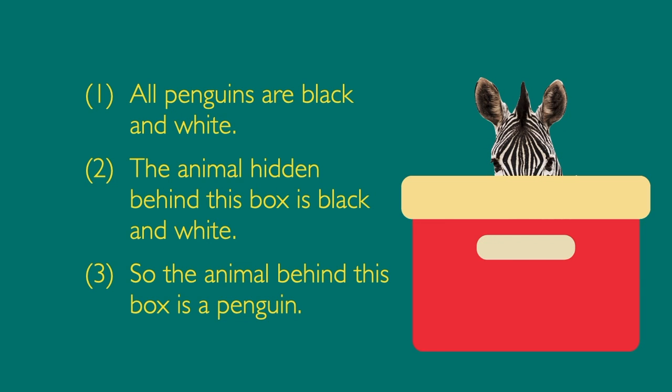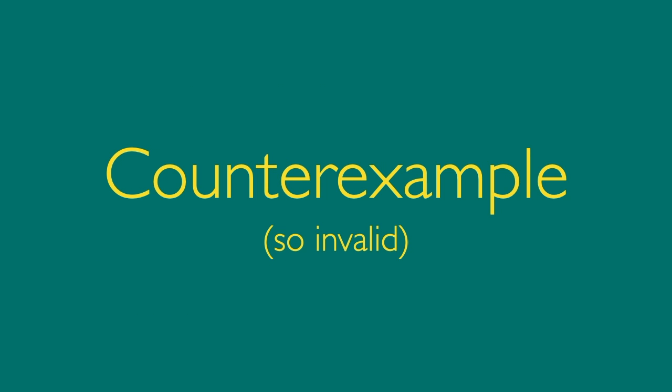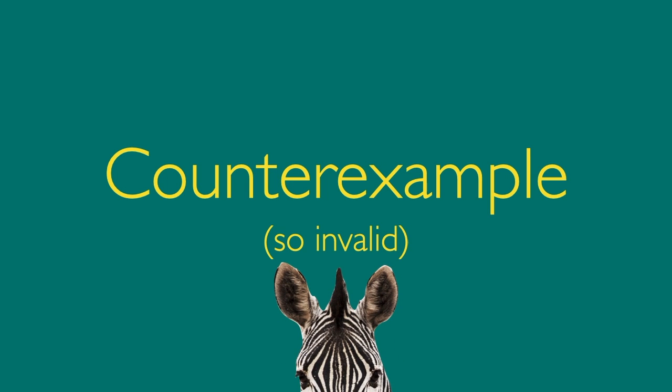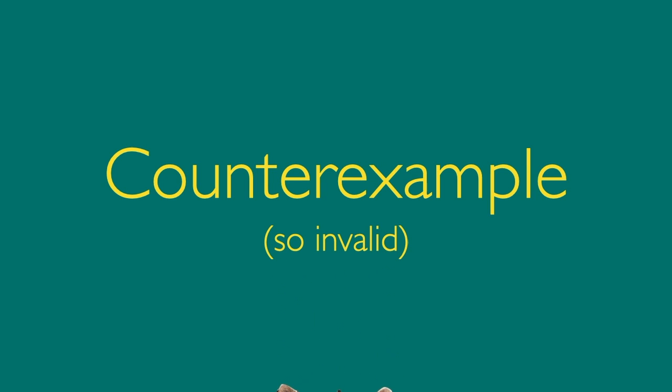Sure, that's easy — maybe it's a zebra. In that case the premises would still be true but the conclusion would be false. So we found a counter-example, and this argument is invalid. Counter-examples are not a surefire method to determine validity — they depend on your creativity and power of imagination. But until you learn more advanced methods, trying to imagine a counter-example is your best bet for evaluating a deductive argument.